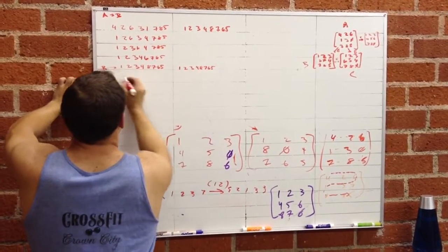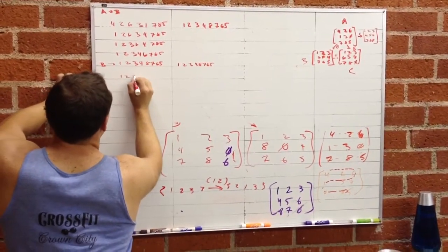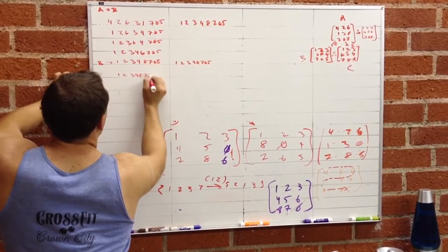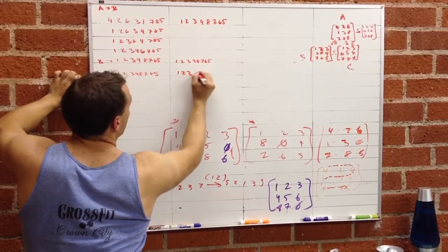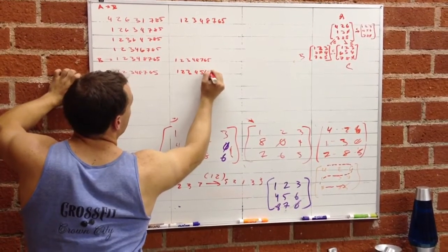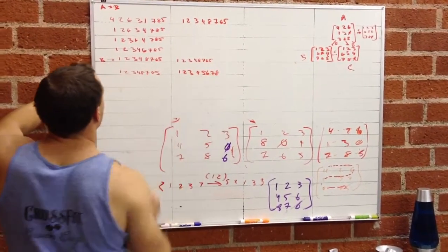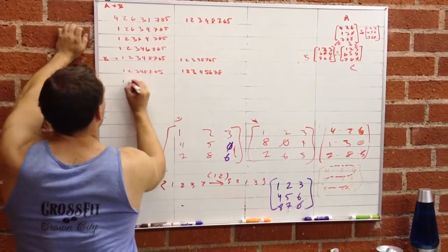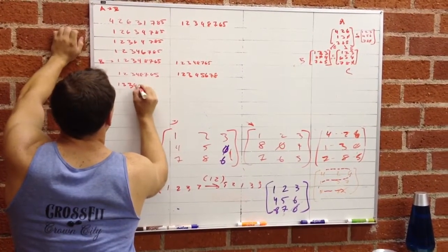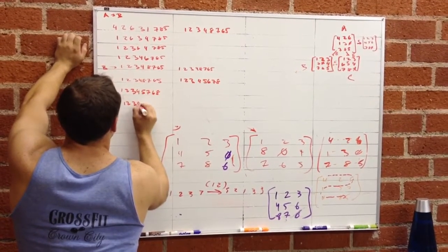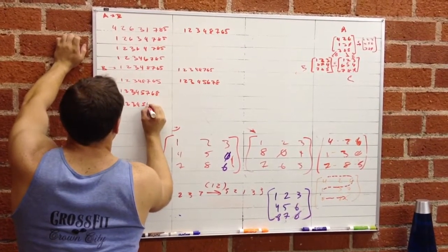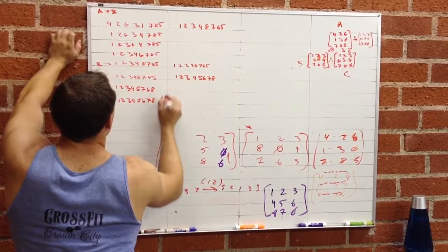Now I want to get to 1, 2, 3, 4, 5, 6, 7, 8. That's going to be 1, 2, 3, 4, 5, 7, 8.